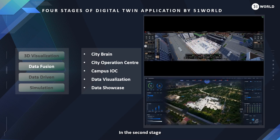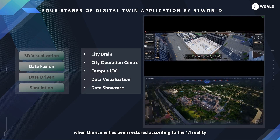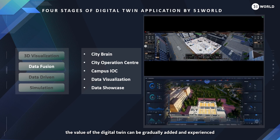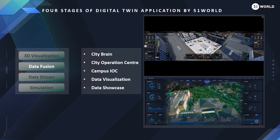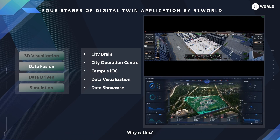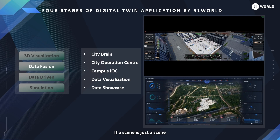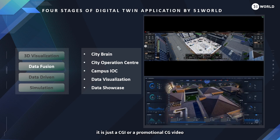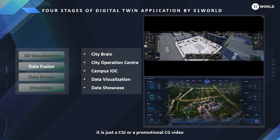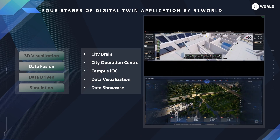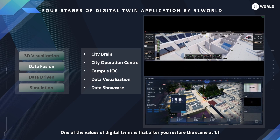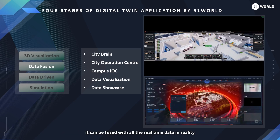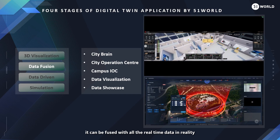In the second stage, when the scene has been restored according to 1-to-1 reality, the value of the digital twin can be gradually added and experienced. If a scene is just a scene, even if it is beautifully done, it has no real industrial value — it is just a CGI or a promotional CG video. One of the values of digital twins is that after you restore the scene at 1-to-1, it can be fused with all the real-time data in reality.